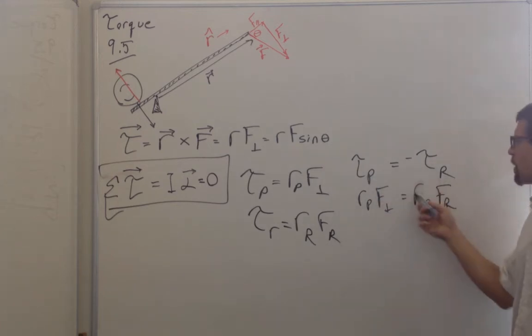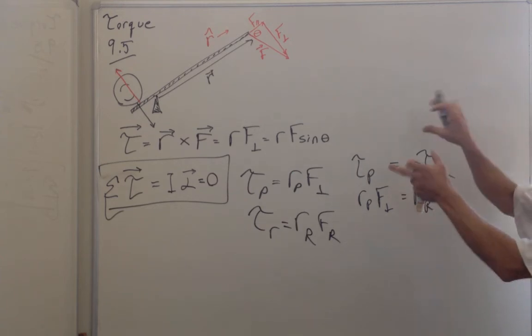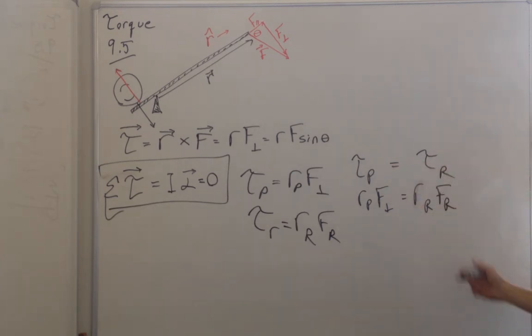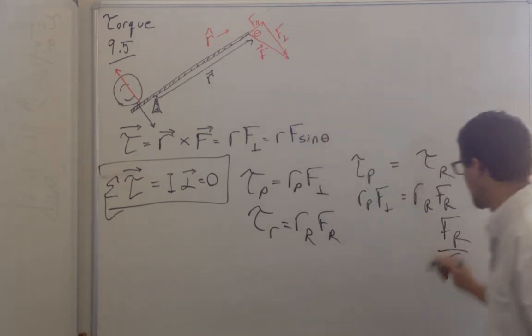So if I set the torques equal to each other in magnitude, who cares about the sign right now? We can see they're in opposite directions. What we can see is the force that I put on the rock, the force that the rock puts on me, which is equal to the force I put on the rock, compared to the force that I'm applying to the end here, is just equal to these ratios.